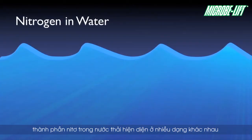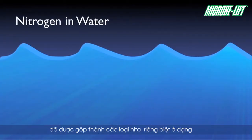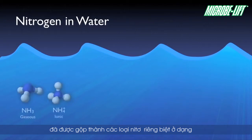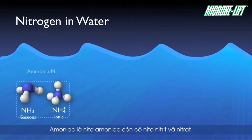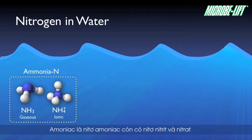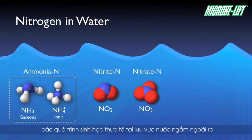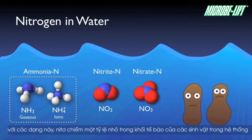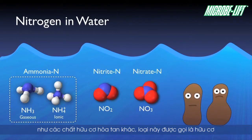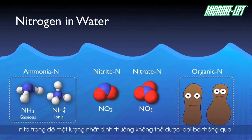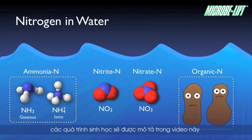Nitrogen is present in wastewater in various forms, which have been lumped into separate general categories. Nitrogen in the form of ammonia is ammonia nitrogen. There is also nitrite nitrogen and nitrate nitrogen, which are usually formed during the actual biological processes at the wastewater treatment plant. In addition, nitrogen makes up a small percentage of the cell mass of the organisms in the system, as well as other dissolved organic compounds. This category is referred to as organic nitrogen, of which a certain amount typically cannot be removed through the biological processes described in this video.